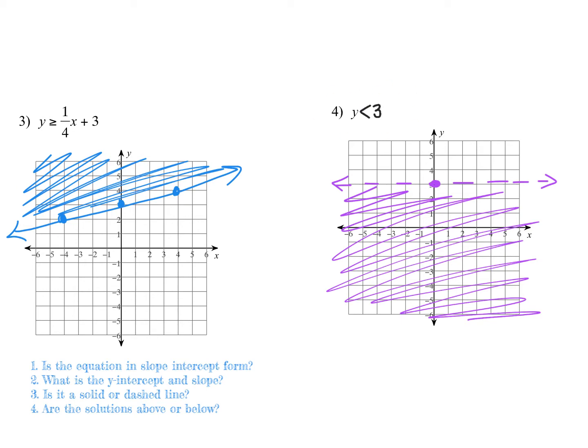Example four has just a Y with no X term, meaning the line doesn't cross the x-axis — it's parallel to it. This is where all y-values are less than three or equal to three. Because it's just less than, not less than or equal to, it's a dashed line. We're not saying y equals three; they're less than three. That's the boundary line, so shade everything below.